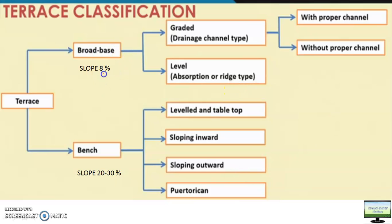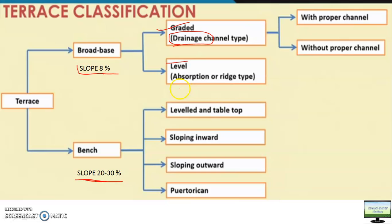Broad based terrace is suitable up to 8% slope, while bench terrace is for higher slopes like 20 to 30 percent. For broad based terrace: if you want to discharge the water it is graded, and if you want to store or absorb it is level. The same classification applies to bench terrace as well.